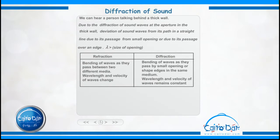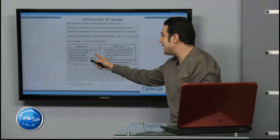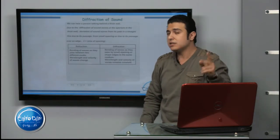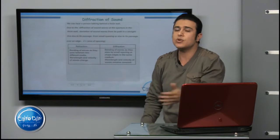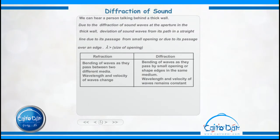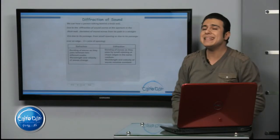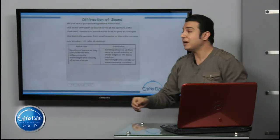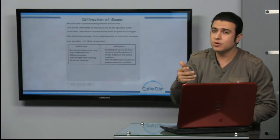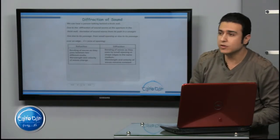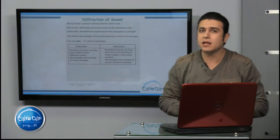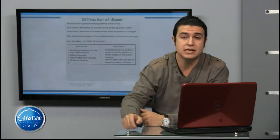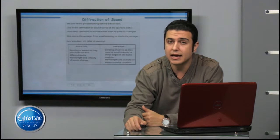Comparing refraction and diffraction: refraction is the bending of waves as they pass between two different media — the velocity changes and the wavelength changes. We use: sin φ / sin θ = V1/V2 = λ1/λ2. Diffraction is the bending of waves as they pass through a small opening, slit, aperture, or over a solid edge. But in diffraction, the wavelength and velocity remain constant — they do not change. That is the difference between refraction and diffraction.